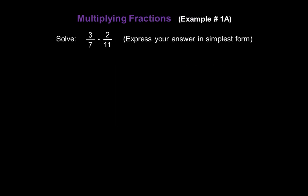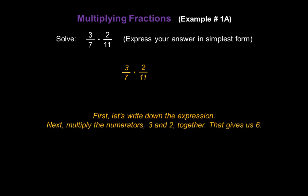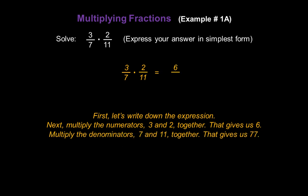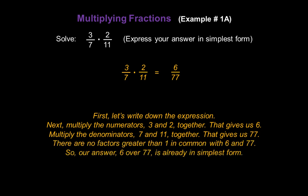Let's take a look at some examples. Let's solve 3/7 times 2/11 and express our answer in simplest form. First, write down the expression 3/7 times 2/11. Next, multiply the numerators 3 and 2 to get a new numerator of 6. Multiply the denominators 7 and 11 to get a new denominator of 77. There are no factors greater than 1 in common with 6 and 77, so our answer, 6/77, is already in simplest form.